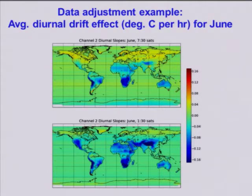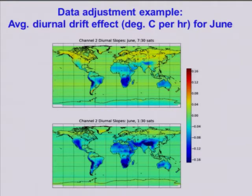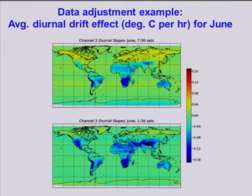This is the average diurnal drift effect we get from the satellites themselves, by comparing a satellite that's drifting with one that's not drifting. The blue areas show roughly a tenth of a degree Celsius cooling per hour as the satellite drifts. There are two plots: one for the 7:30 a.m./p.m. satellites and one for the 1:30 a.m./p.m. satellites. We subtract this drift correction out of the satellite data as the satellites drift through time.